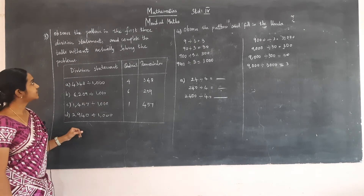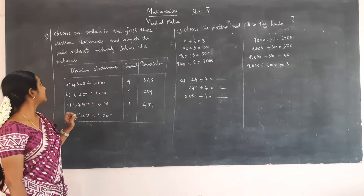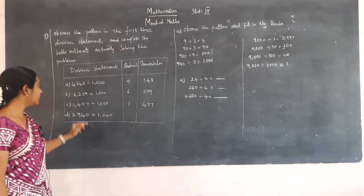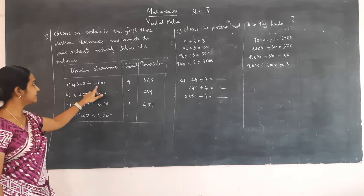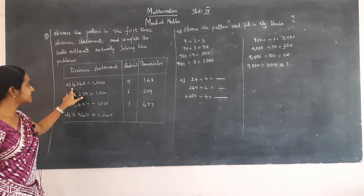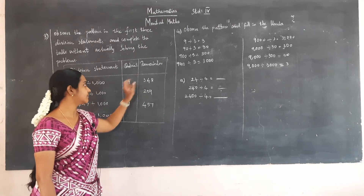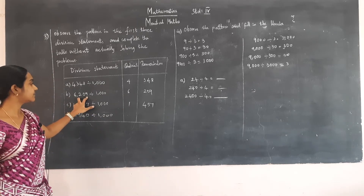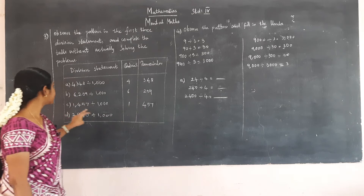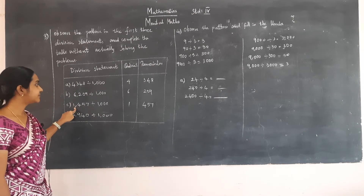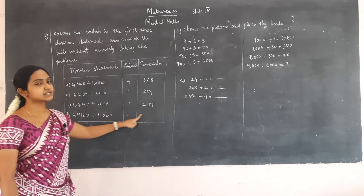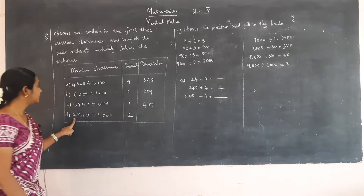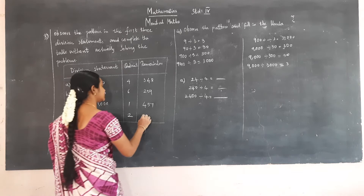The next question: observe the pattern in the first three division statements and complete the table without actually solving the problems. 4348 divided by 1000: the quotient will be the first number and the remainder will be the last three numbers. For 6209, the first number 6 is the quotient and the remaining numbers is the remainder. For another four-digit number, the first number 1 is the quotient and the remaining numbers is the remainder. Here also, the first number 2 is the quotient and the remaining numbers 940 is the remainder.